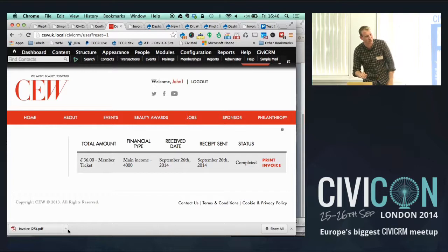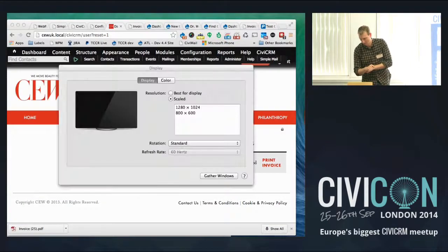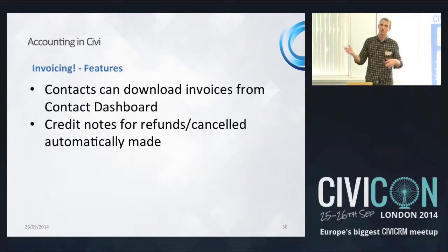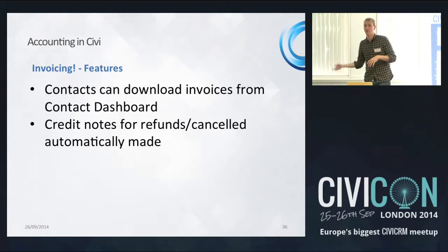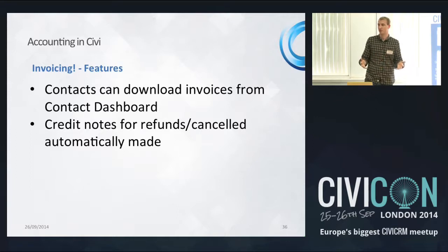The contact dashboard allows people to download their own invoices — this could be part of a members portal. Using the out-of-the-box CiviCRM contact dashboard, people can download their invoices themselves, cutting out admin from having the finance department print and send invoices, and moving that process to the team that has all the client relationship information in the CRM.